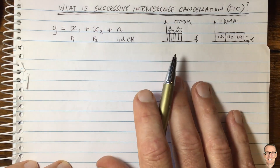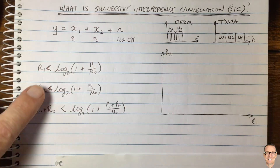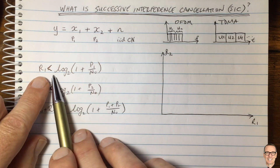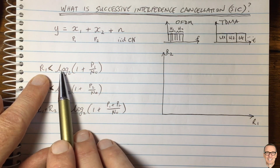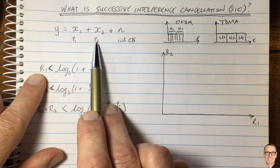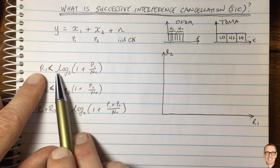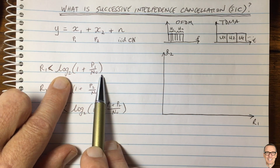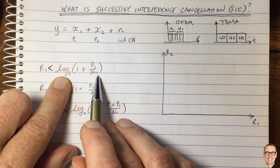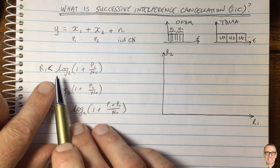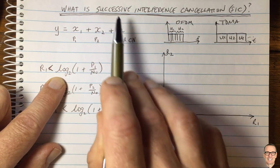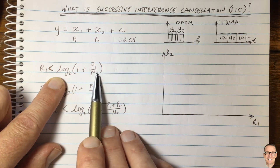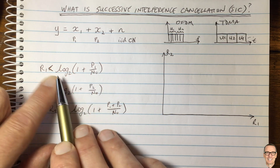Now what do we know about these resources from a capacity point of view? Here are the capacity equations for each user. The first says that if you give the full resource to user 1 — so if user 2 was not transmitting with any power at all — then the rate of user 1 could be up to the Shannon capacity value. Up to this rate, complete transmission with zero errors is possible, and that's going to be an important point for successive interference cancellation.